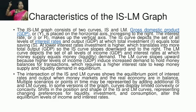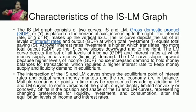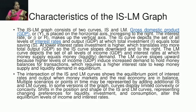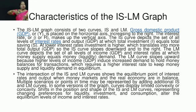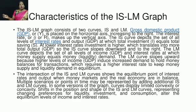The IS curve slopes downward because as the interest rate is low, there will be greater investment. The LM curve slopes upward because if investment is higher, the money supply will also increase. The intersection of the IS-LM curves shows the equilibrium point of interest rate and output when the money market and the real economy are in balance.